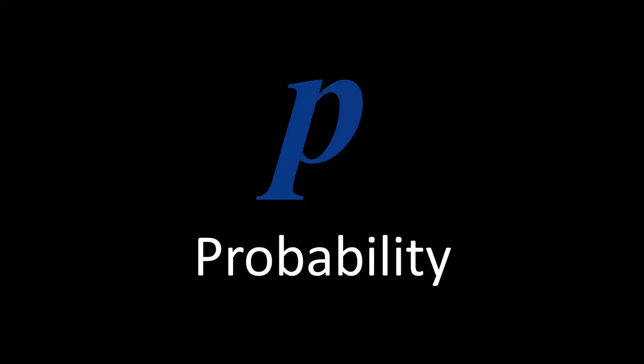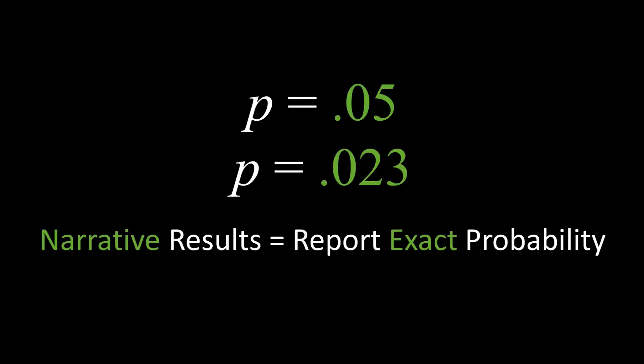Probabilities range from 0 to 1 and are represented in a decimal format. When displaying probabilities in a narrative description of your paper, use lowercase p in italics and report the exact probability with two or three decimal places.